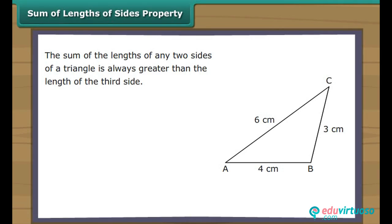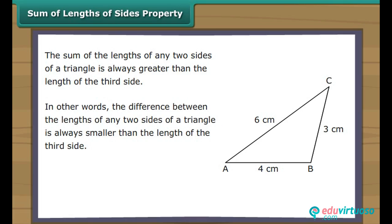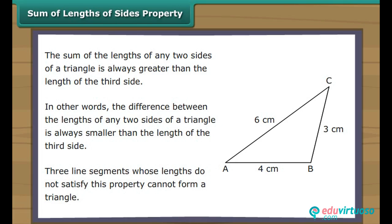Sum of lengths of sides property. The sum of the lengths of any two sides of a triangle is always greater than the length of the third side. In other words, the difference between the lengths of any two sides of a triangle is always smaller than the length of the third side. Three line segments whose lengths do not satisfy this property cannot form a triangle.